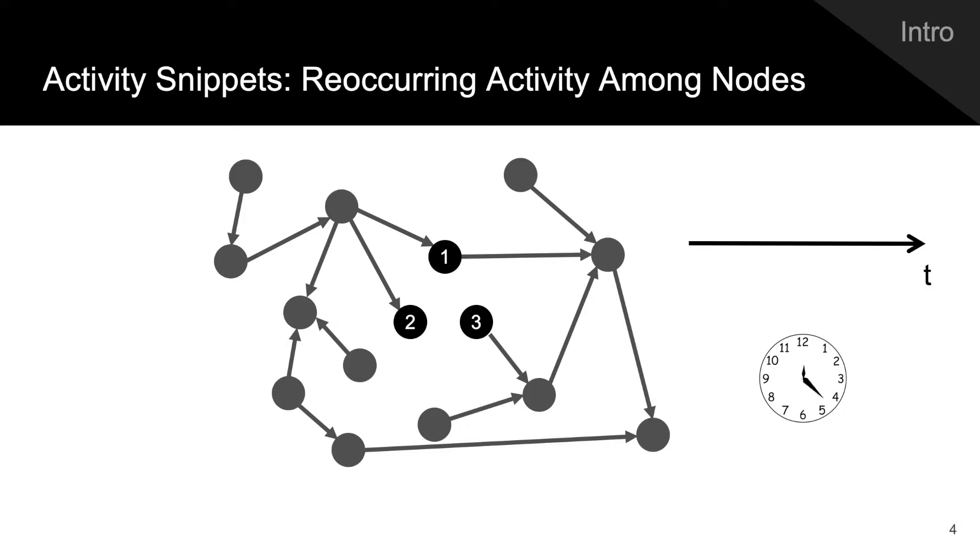In this work, we look at mining activity that persists through time in continually evolving networks. We extend the notion of temporal motifs to capture pairwise and higher order activity among specific nodes in what we call activity snippets, which are small sequences of edge updates that reoccur.